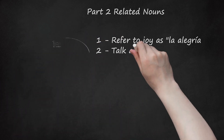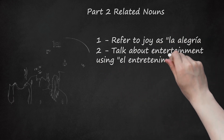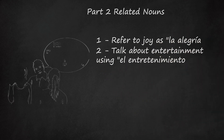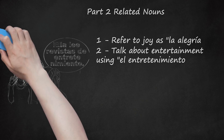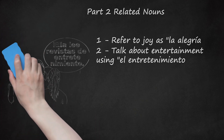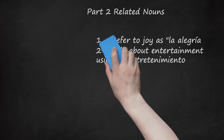2. Talk about entertainment using 'el entretenimiento.' This masculine noun means entertainment or amusement in English. Pronunciation: el-en-tre-te-ni-mien-to. Example: 'Ella lee revistas de entretenimiento' — She reads magazines for entertainment.